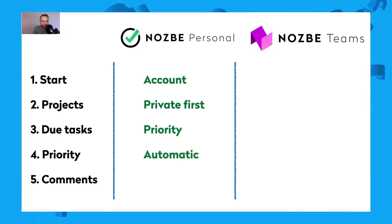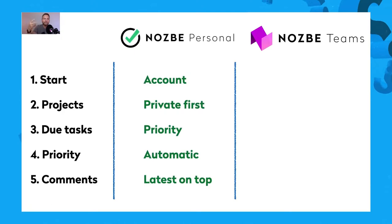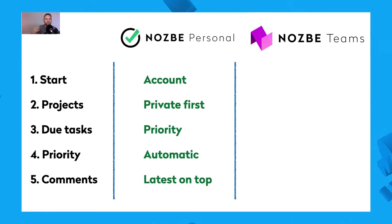Comments in Nozbe Personal — the latest comment is on top. Because if it's a personal tool, there are hardly any comments. Even if you share projects, you don't put so many comments. So having two or three comments with the most useful one on top is fine. It's a good design.